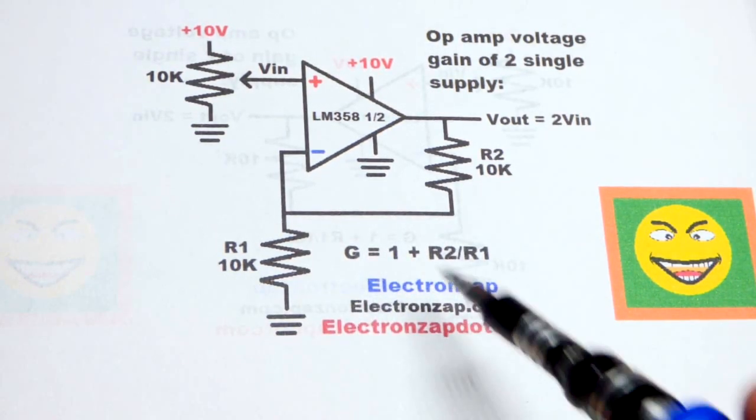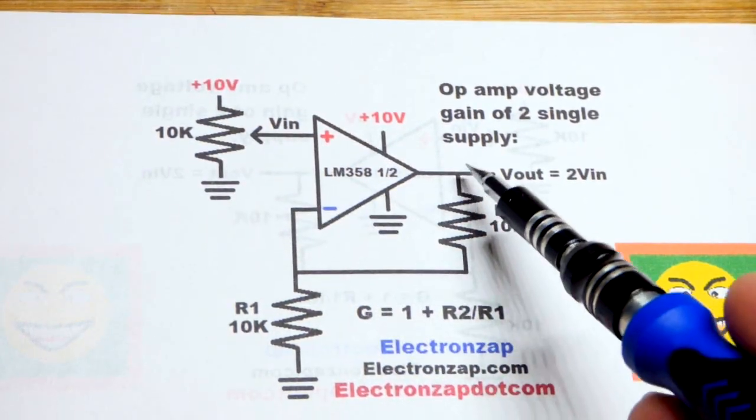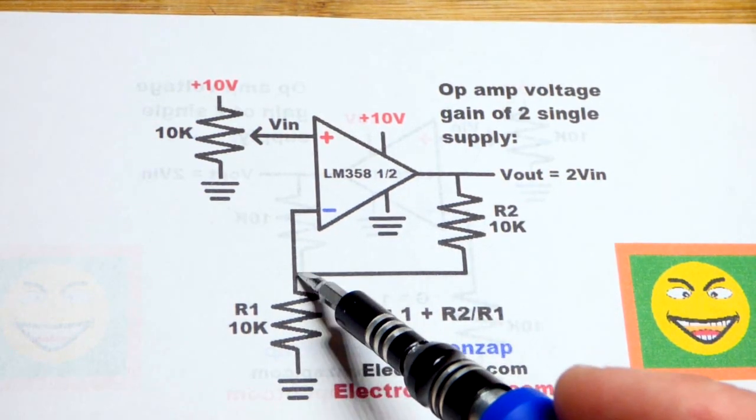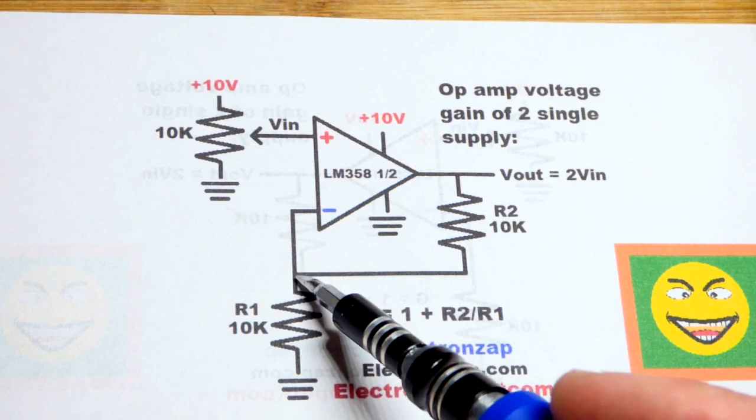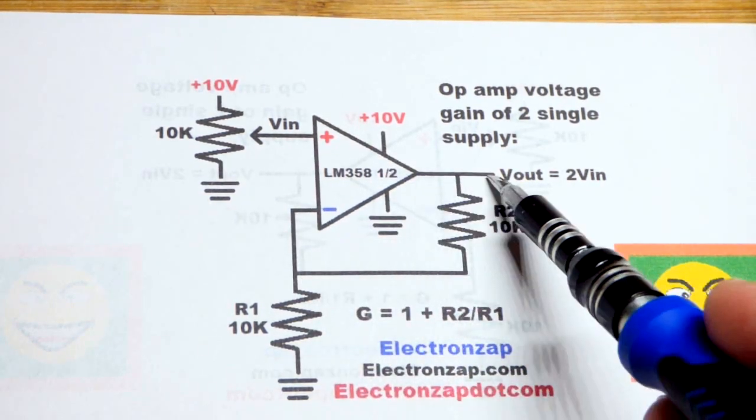We have the voltage in, we're going to set with a trim pot right there. And you can see here that we have a voltage divider. Since they're equal value, we'll have half of the value at the inverting input there that we have at the output.